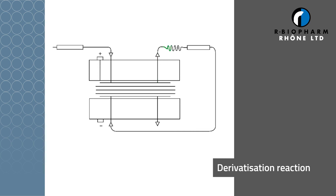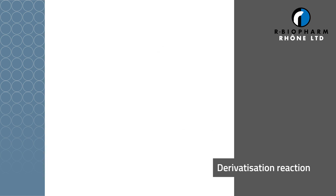The solution then comes out of the detector and enters the COBRA cell again. However, a reverse reaction occurs on the underside of the membrane to prevent free bromine ions being discarded to waste.